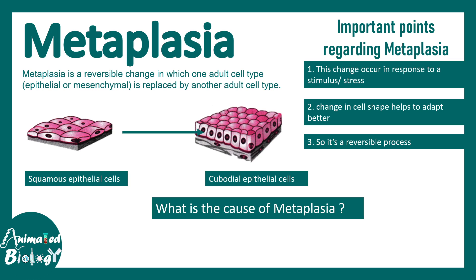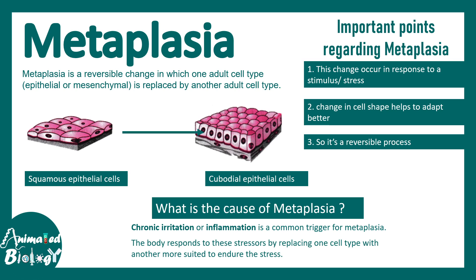What is the common cause of metaplasia? Basically, chronic irritation and inflammation can be a common cause or trigger for metaplasia. The body responds to these kinds of stressors by replacing one cell type with another.